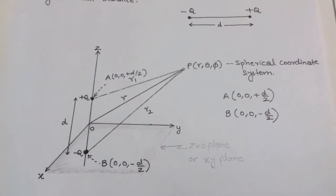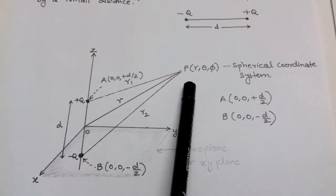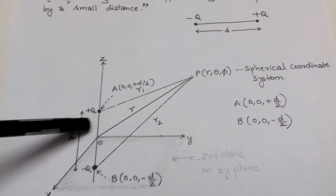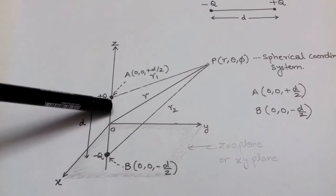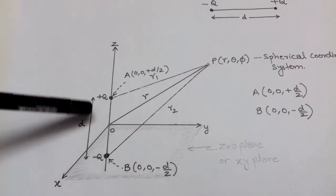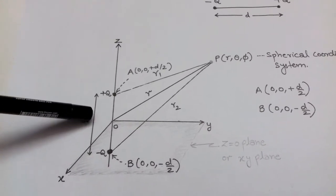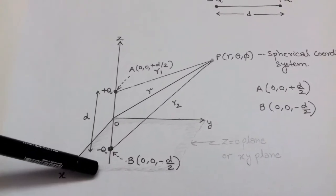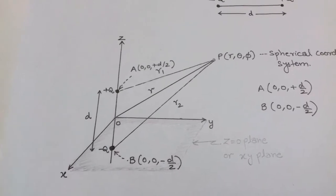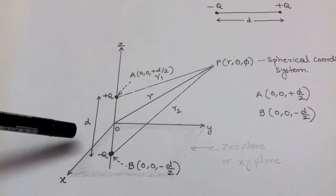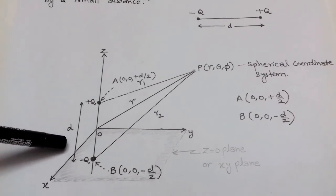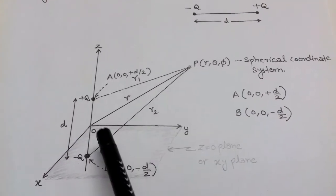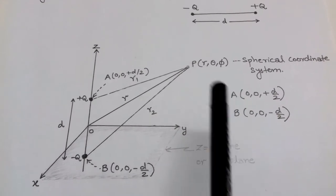We have to determine the electric potential due to this electric dipole. For this, we place the electric dipole on the z-axis. The plus q charge is placed on the positive z direction and the minus q charge is placed on the negative z direction. The distance between the two charges is small d, and the midpoint of the dipole is at the origin.